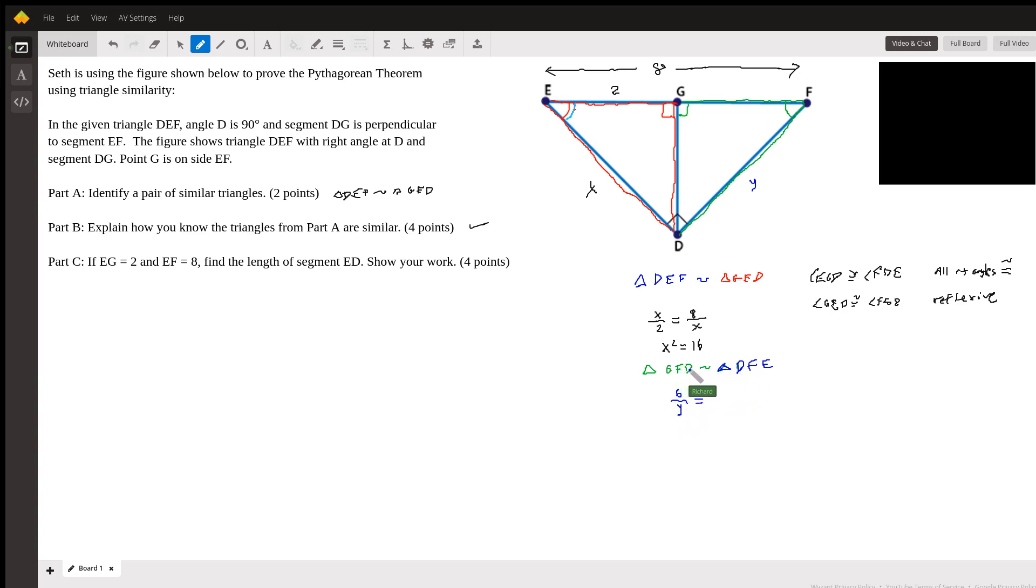And then FD, which is Y, corresponds to FE, which is 8. So Y squared is equal to 48.